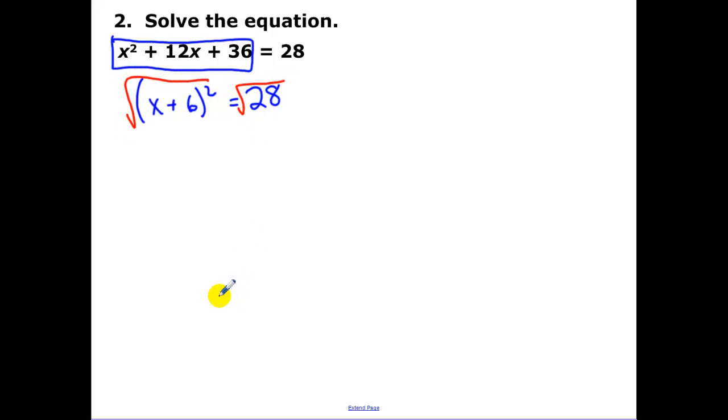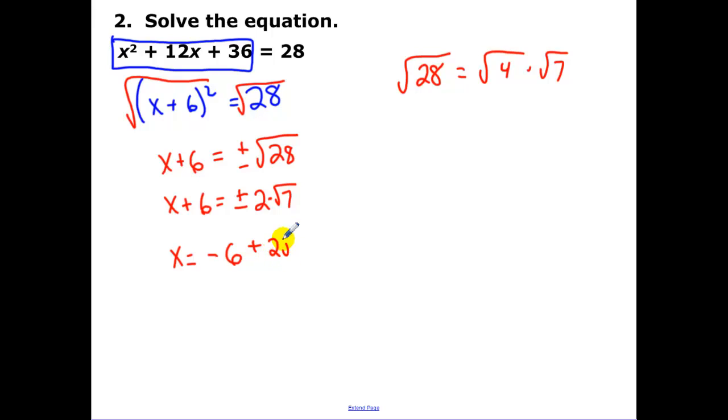Then we square root both terms. So I have x + 6 equals plus or minus root 28. Now pull out any perfect squares we have. 28 is 7 times 4, so a 2 can be pulled out in front. Notice how it's 2 times root 7. Now we're going to subtract 6 from both sides. So really what we have is two answers: negative 6 plus 2 root 7 and negative 6 minus 2 root 7.